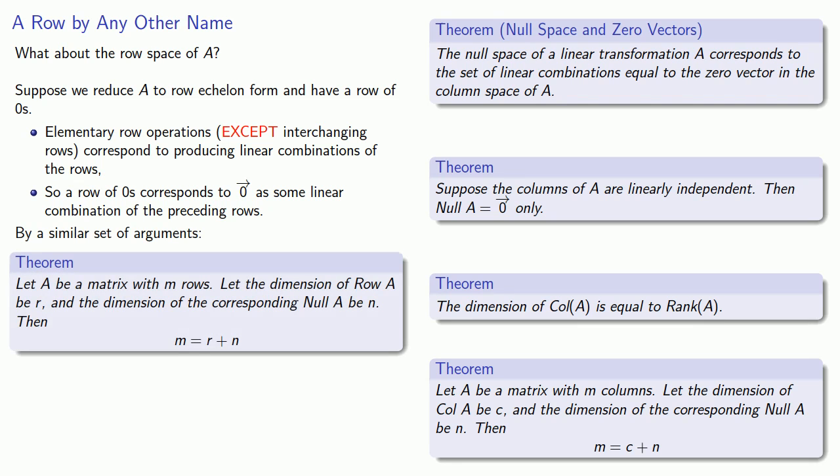If we have a matrix with m rows, let the dimension of the row space of A be R and the dimension of the corresponding null space of A be N. Then m is equal to R plus N.